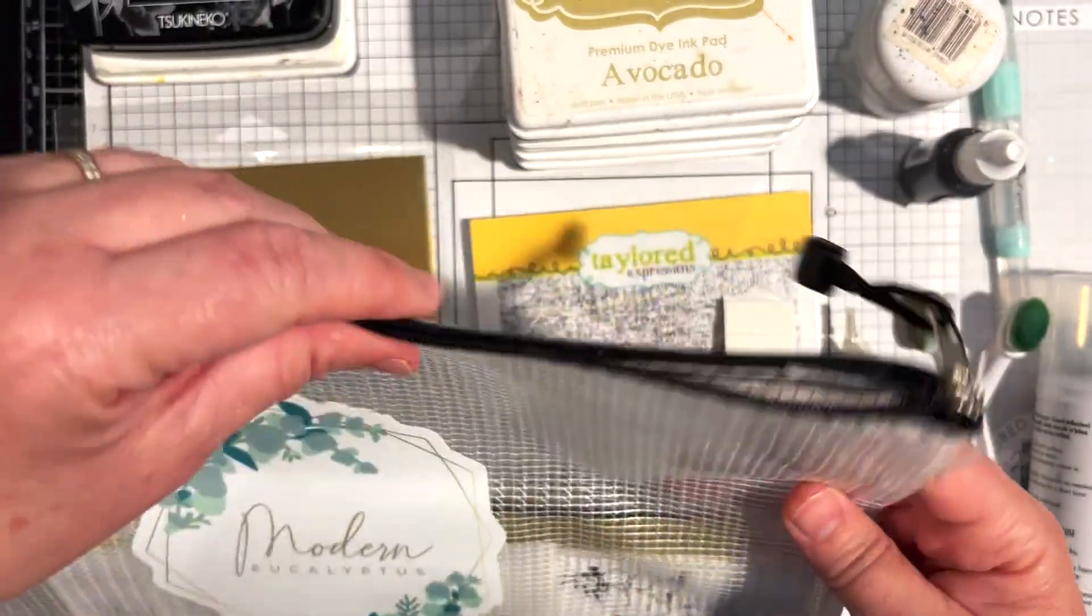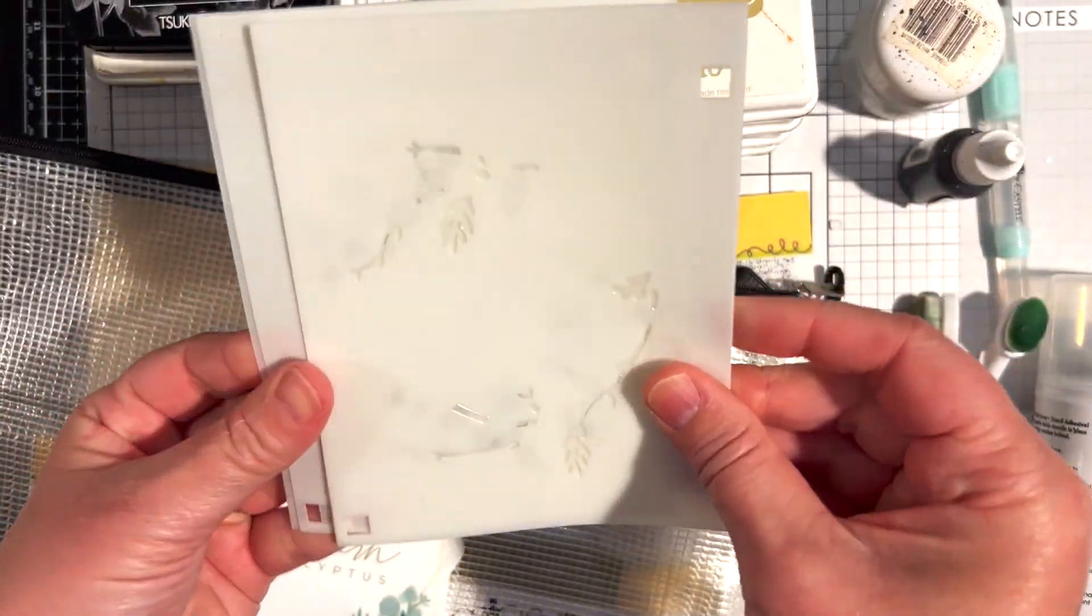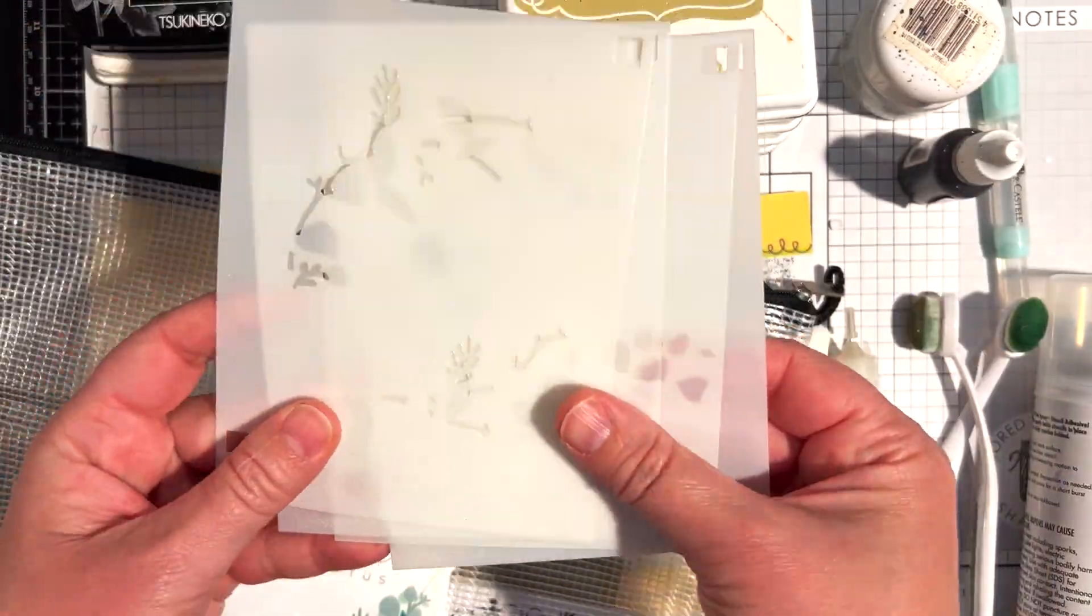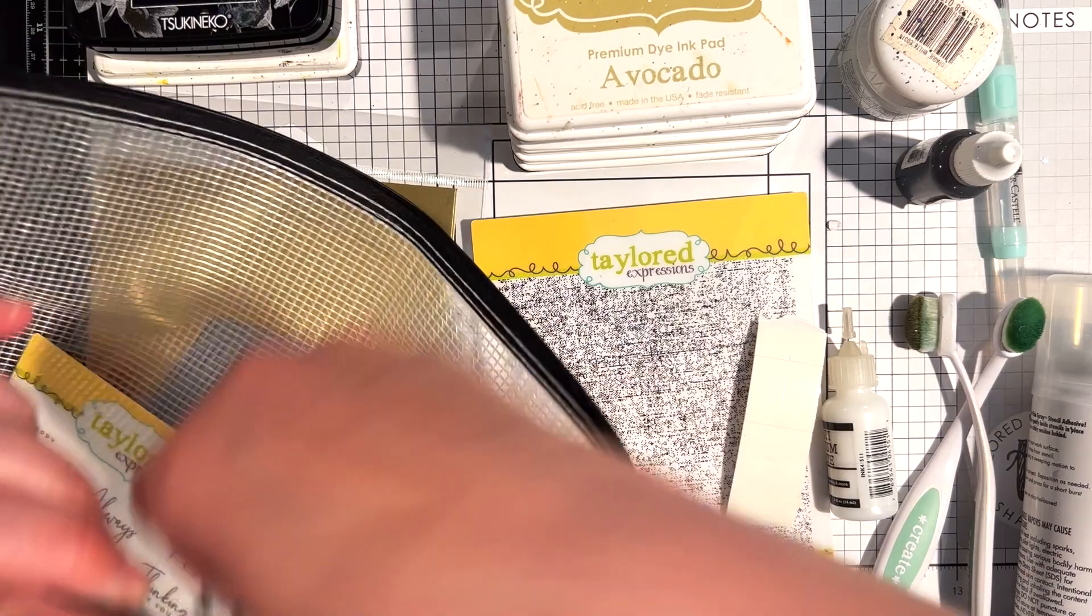From the kit I used the modern eucalyptus layering stencil set. This is a set of four stencils that will create two different sizes of eucalyptus swags. I also used the coordinating modern eucalyptus dies and the scripted sentiments stamp set.